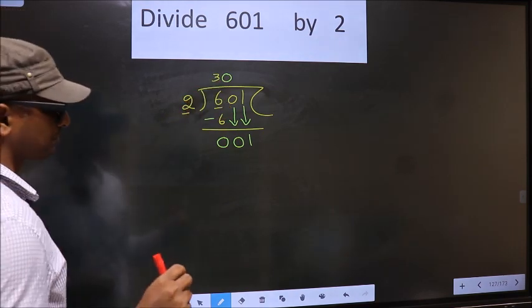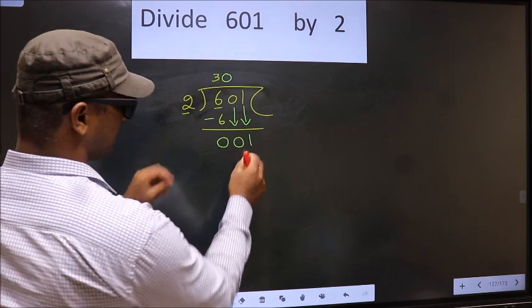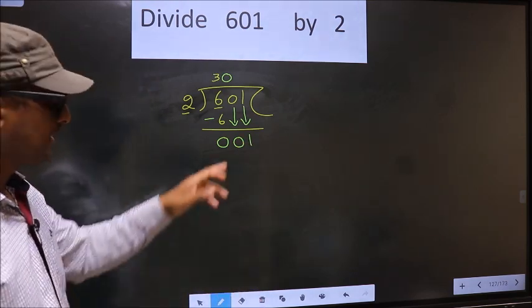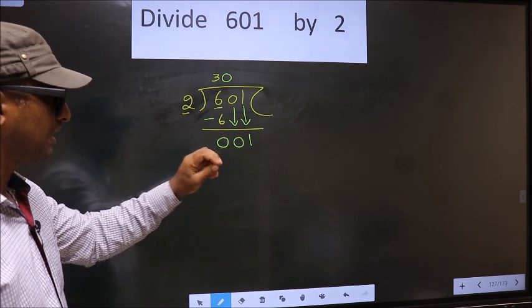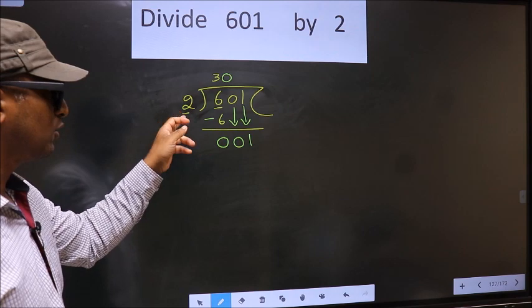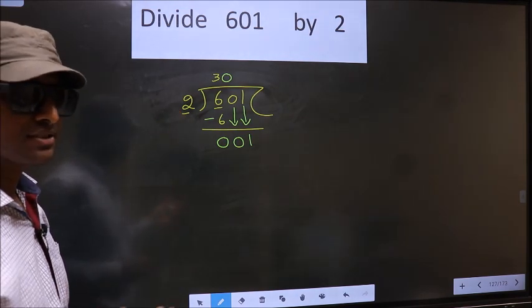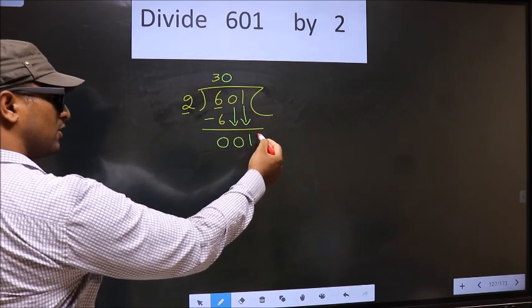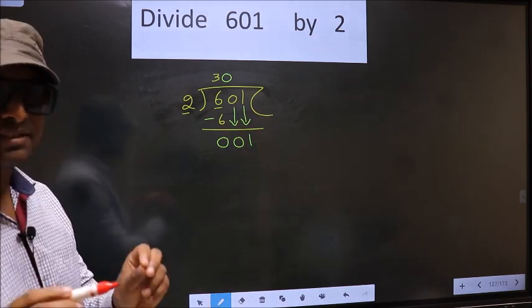Now, this is where the mistake happens. And the mistake is this. Here we have 1. Here 2. 1 is smaller than 2. So what many now do is they put a dot and take 0 here. Which is wrong.